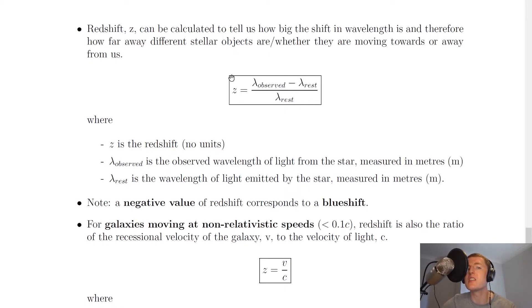So here's your equation, and it's basically a ratio of wavelengths. z equals lambda observed minus lambda rest divided by lambda rest. Where z is the redshift, which has no units, so it's just a number. Lambda observed is the observed wavelength of light from the star measured in meters, and lambda rest is the wavelength of light emitted by the star measured in meters.